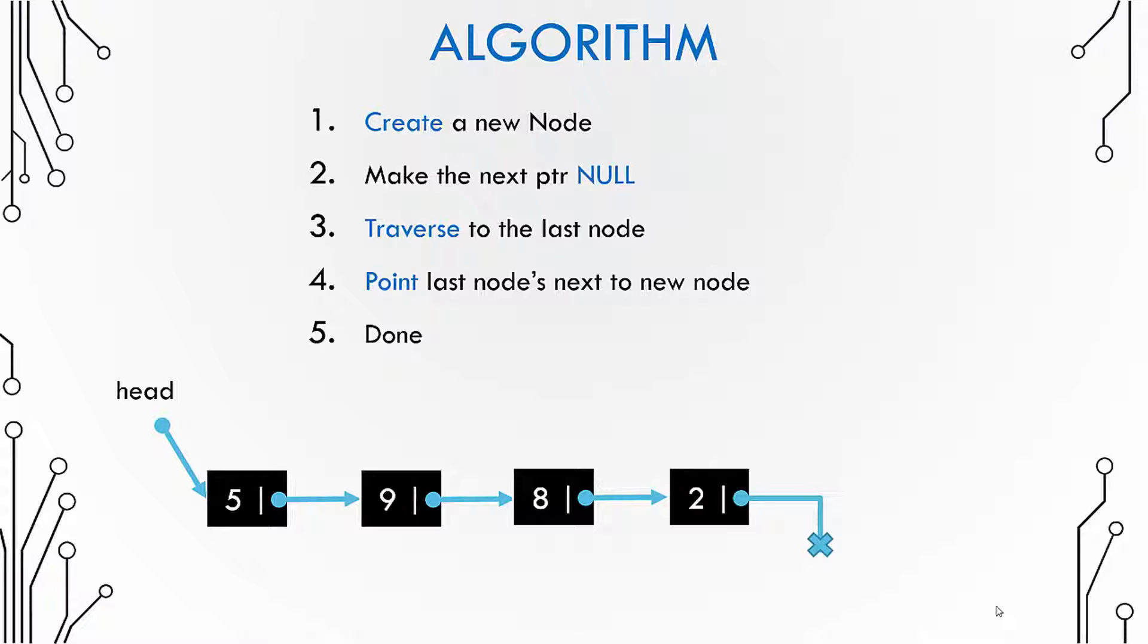The first step is to create a new node. And then since this node would be the last node, we would make its next pointer as null.